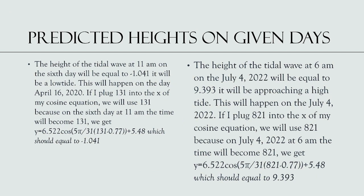For predicted heights on given days: the height of the tidal wave at 11 a.m. on the sixth day will equal negative 1.041 — it will be a low tide. This happens on April 16, 2020. Plugging x = 131 into the cosine equation (131 represents the sixth day at 11 a.m.), we get y = 6.522 · cos((5π/31)(131 − 0.77)) + 5.48 = −1.041.